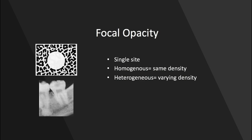Now for some radiopaque lesions. We have the focal opacity — this is the basic single site. There's one central point of origin, and it can be homogenous, where the whole thing is the same density, or it can be heterogeneous, where there are varying densities of that radiopaque lesion.